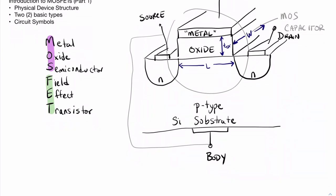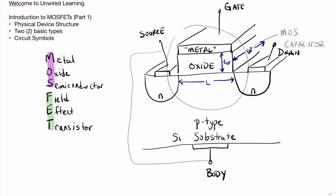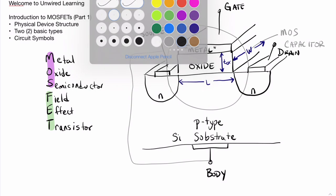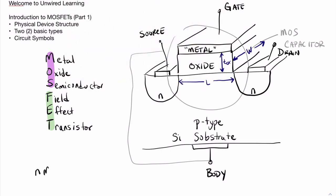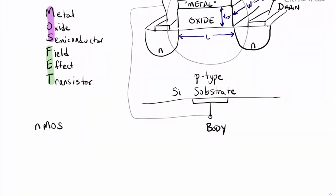This particular type of device, because it has n regions on either side for the drain and the source, this particular type of device would be called an nMOS transistor. Because it forms a continuous layer, and we'll learn more about this later, but it forms a continuous layer of n-type carriers across the length of the device for which current can flow through the device. And so since it's an n-channel, we call it an nMOS.